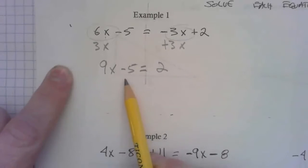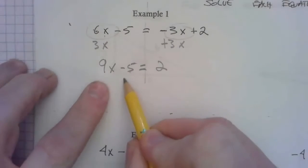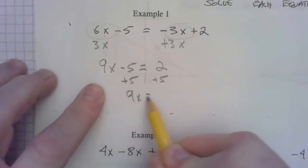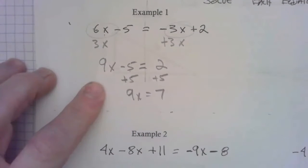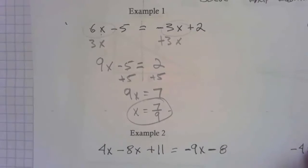Now it's like one of those two-step equations we looked at earlier. I take care of this first, add 5 to both sides, and I get 9x equals 7, and then finally divide both sides by 9, and x will equal 7 ninths.